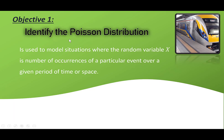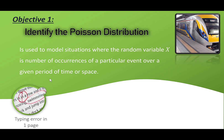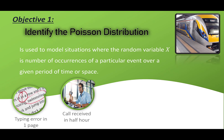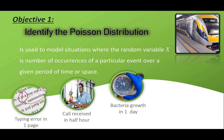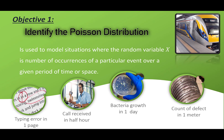Objective 1: identify the Poisson distribution. It is used to model situations where the random variable X is the number of occurrences of a particular event over a given period of time or space. For example, the average typing errors in one page, the average calls received in half an hour, bacteria growth in one day, and the count of defects in one meter — where one page, half an hour, one day, and one meter represent the time or space given.